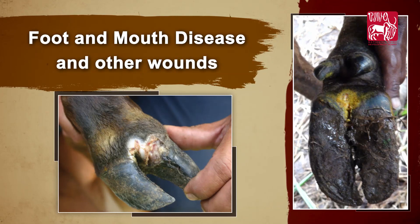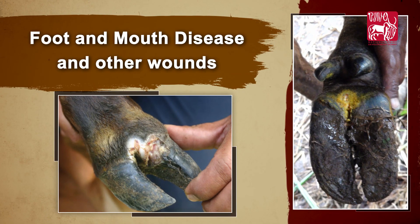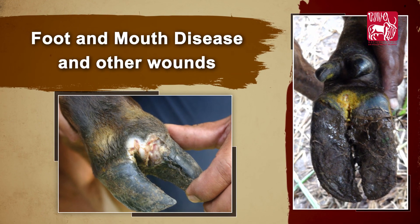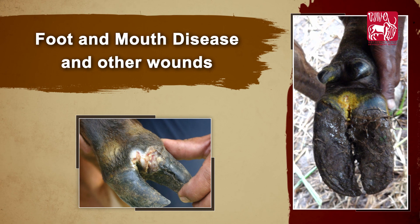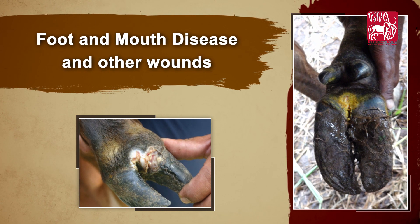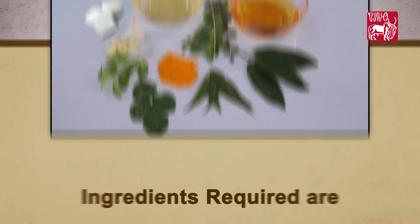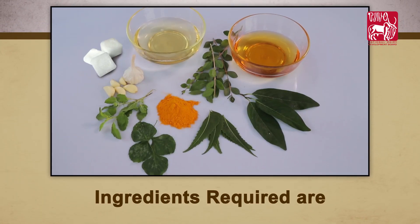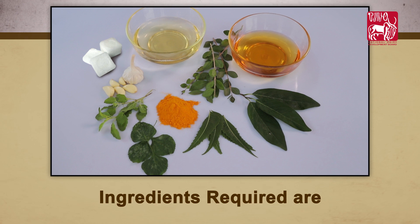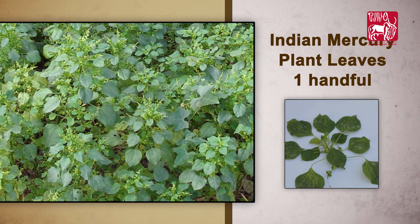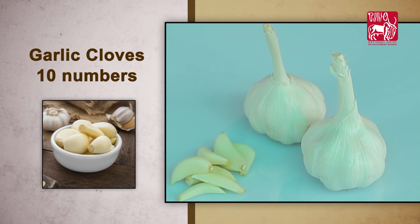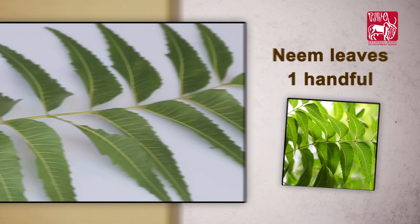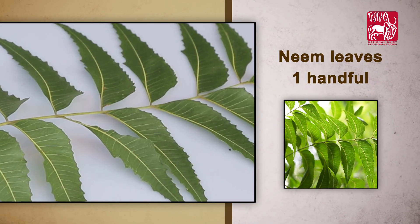To manage lesions due to foot and mouth disease and other wounds, the ingredients required are: Indian mercury plant leaves — one handful, garlic cloves — 10 numbers, and neem leaves — one handful.